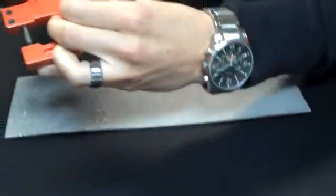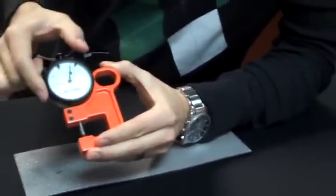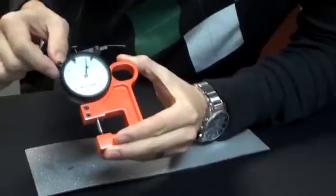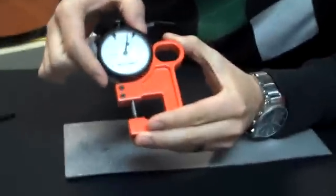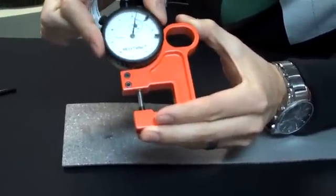So now I'm going to go ahead and place it into the Elcometer 124. But first of all, I need to subtract the thickness of the tape. And the thickness of this tape is 2 mils. So I'm just going to adjust this from 0 to 8 to make up the difference.